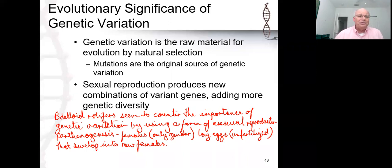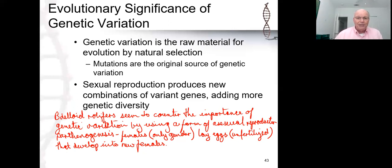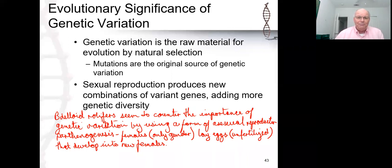If you take the general biology two class, we talk about that in detail. The question of what really necessitates genetic variation — whether it's for its own sake or there is a target — turns out that there may very well be a target: our ability to resist pathogens, specifically through the immune system. The bdelloid rotifers have other ways of generating the genetic variation they need to continue reproducing asexually.